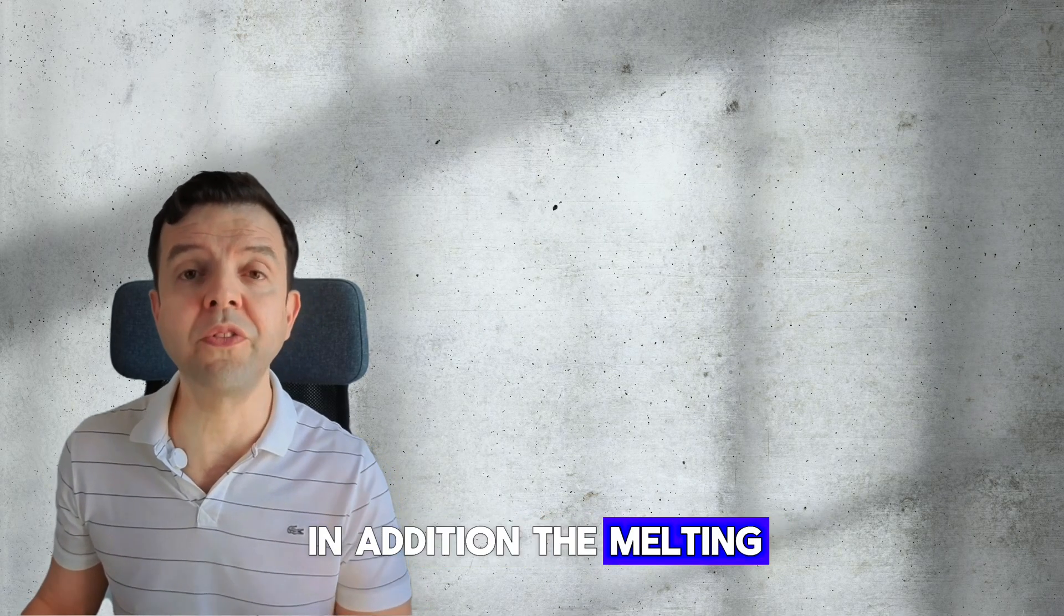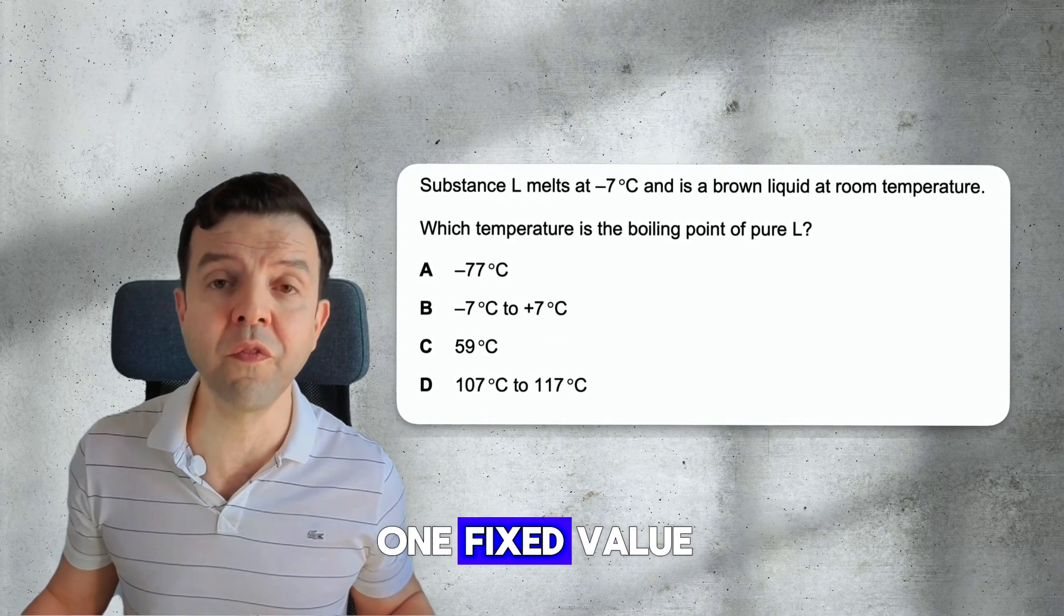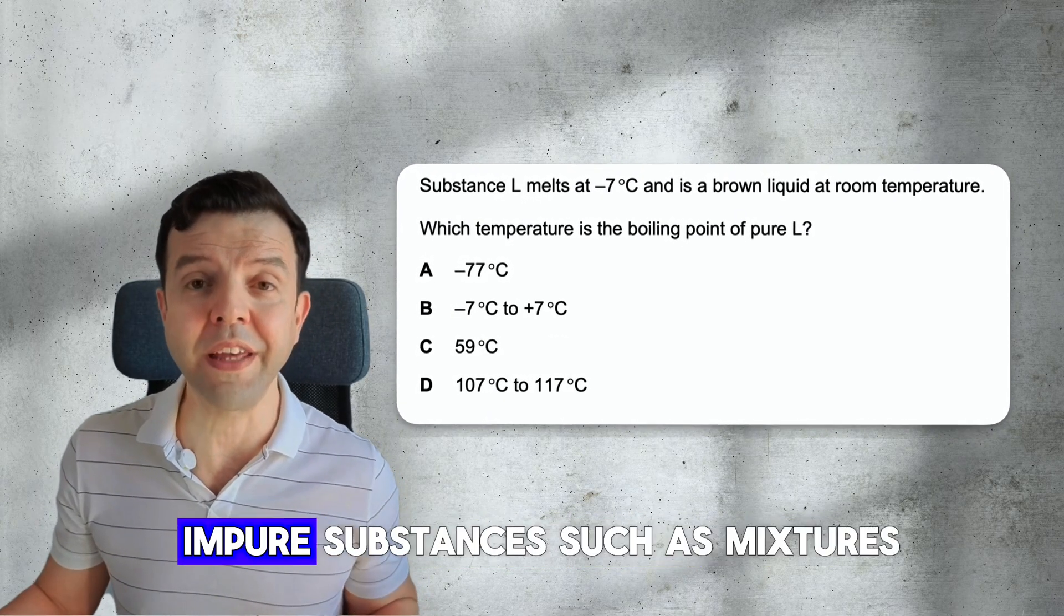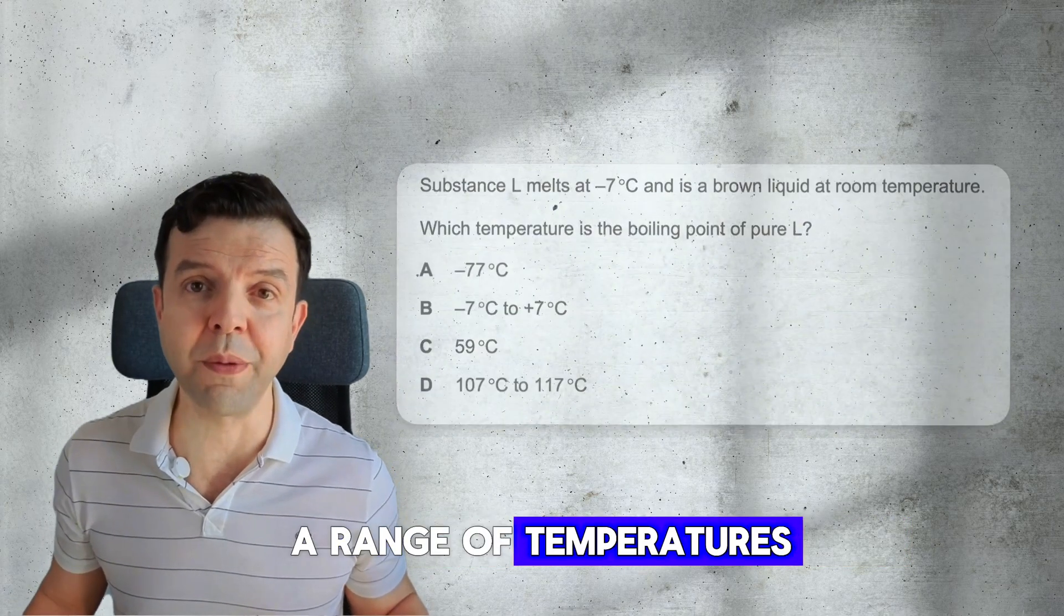In addition, the melting and boiling point of pure substances are always one fixed value. On the other hand, impure substances, such as mixtures, melt and boil over a range of temperatures.